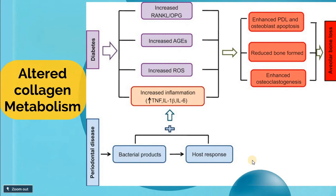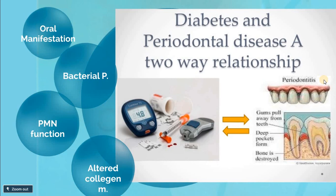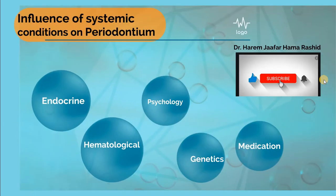In periodontal disease in diabetic patients, bacterial products and host responses secrete cytokines, which together with diabetes-related accumulation of advanced glycosylated end products and other mediators lead to enhanced periodontal ligament and osteoblast apoptosis, reduced bone formation, and enhanced osteoclastogenesis, ultimately leading to alveolar bone loss. This summarizes the effects of endocrine diseases, especially diabetes mellitus, on the periodontium and periodontal disease.